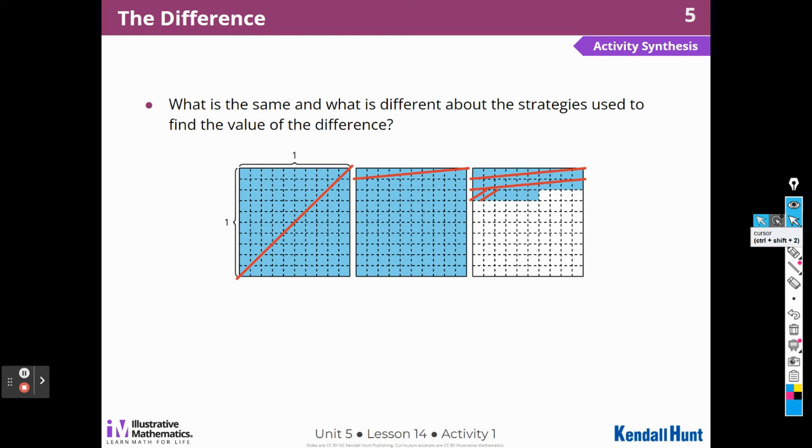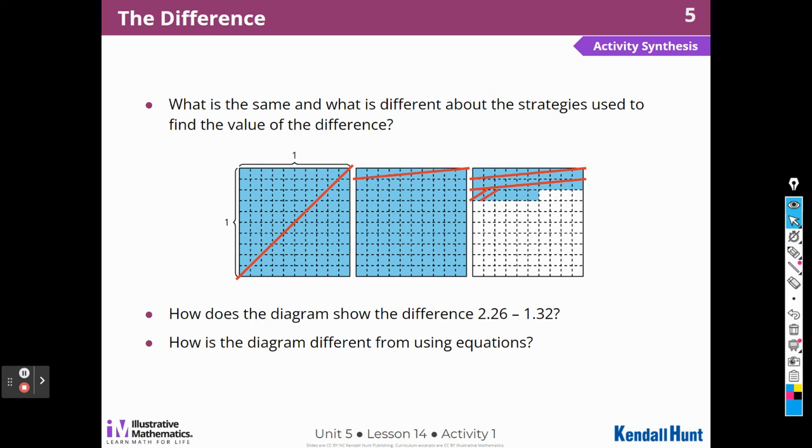This student decided to draw it, right? So she drew first 1, 2 holes, and 20, 1, 2, 3, 4, 5, 6 hundredths. And then she took out 1 hole. So she's subtracting 1 and 1, 2, 3 tenths, and 1, 2 hundredths. And what she would be left with is 1, 2, 3, 4, 5, 6, 7, 8, 9 hundredths. No, I'm sorry, 9 tenths and 4 hundredths, which is the answer that we got. So if you like this method, it's a great method to use. It just takes a little bit more time. And we just talked about how the diagram shows them and how the diagram is different from using an equation.